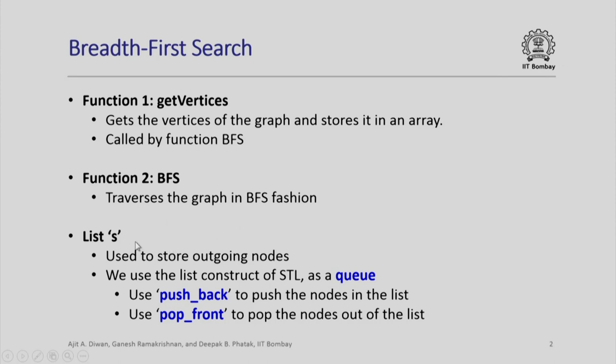We will now use a list s, but this time we will use the list construct of STL as a queue. This is also used to store outgoing nodes, but the fundamental difference is instead of stack we are going to use this list as queue. Consequently we will use push back function which will push the nodes in the list and pop front function to pop the nodes out of the list. These are the two functions which are different from a stack operation; they implement the queue operation. Please remember a queue will always push at the back of the queue and pop will always pop from the front of the queue. The simple difference makes the search from depth first search to breadth first search.